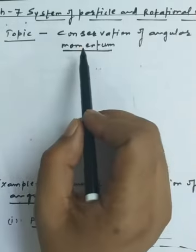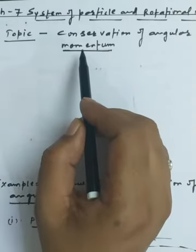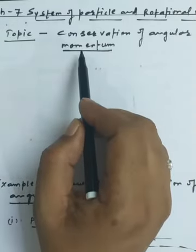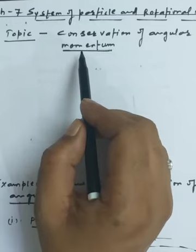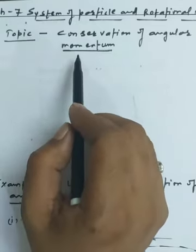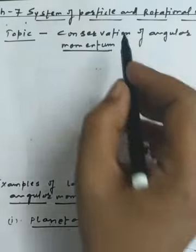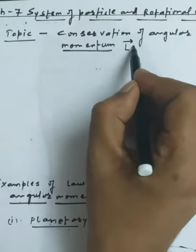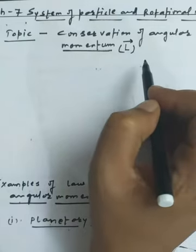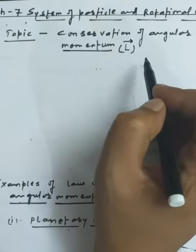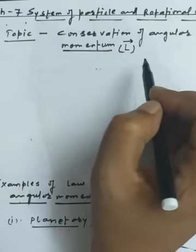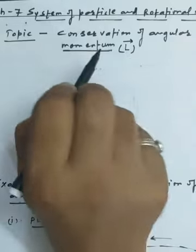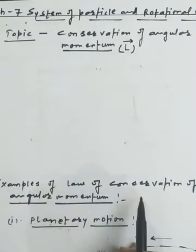Dear students, chapter number seven: System of Particles and Rotational Motion. Today we have the topic for discussion: conservation of angular momentum. We know that in rotational motion the angular momentum is always conserved, so here we want to discuss some practical applications in which the angular momentum is conserved.